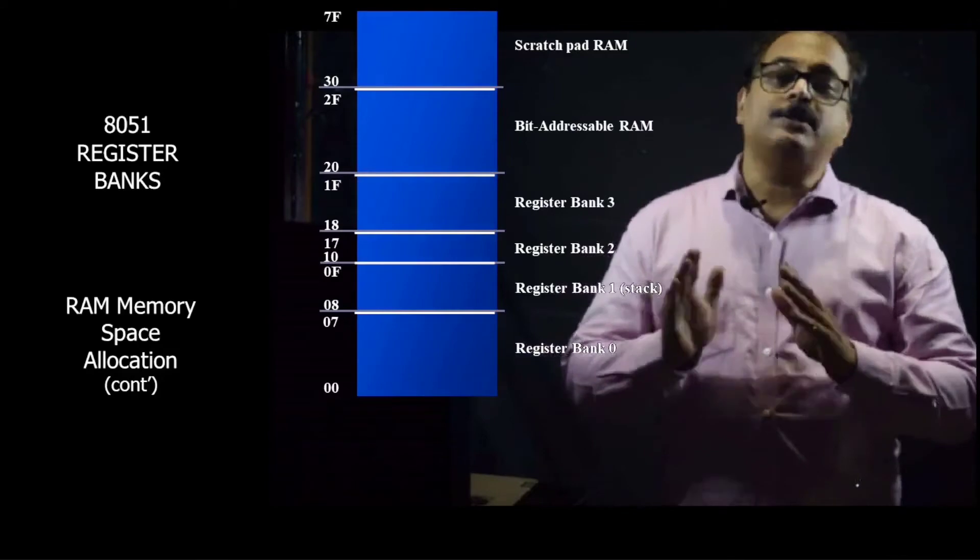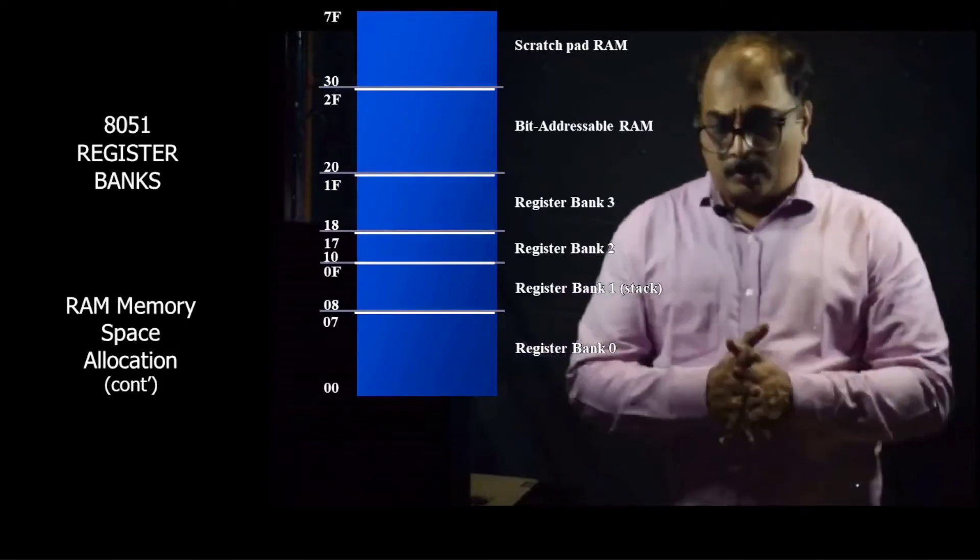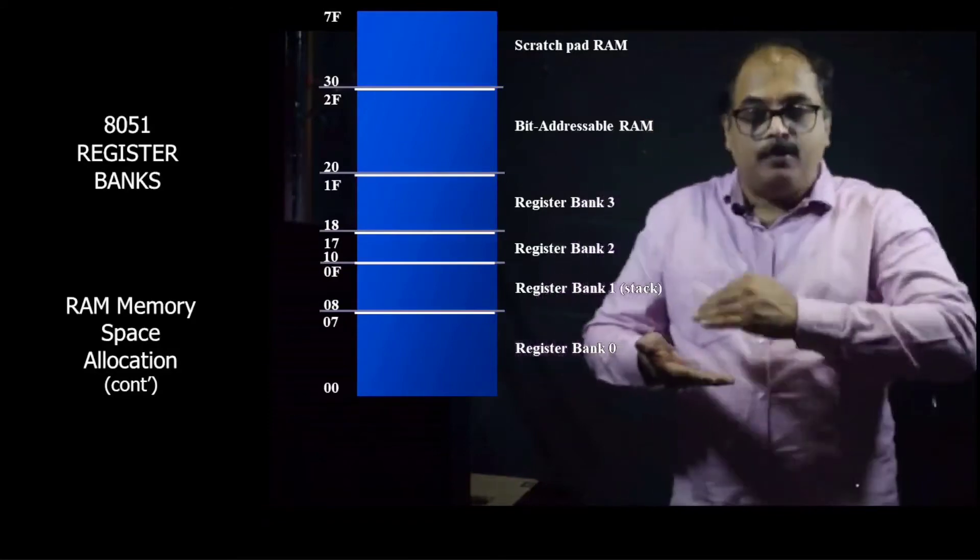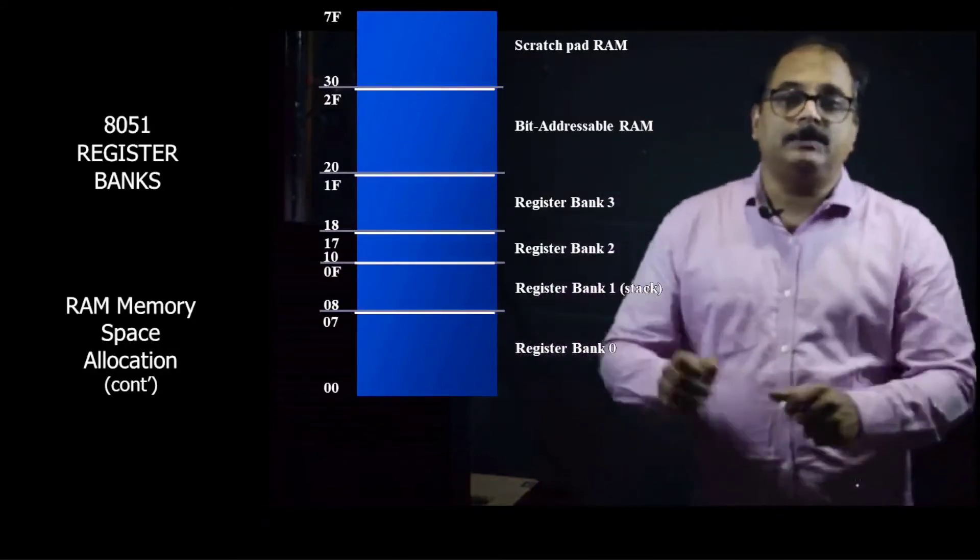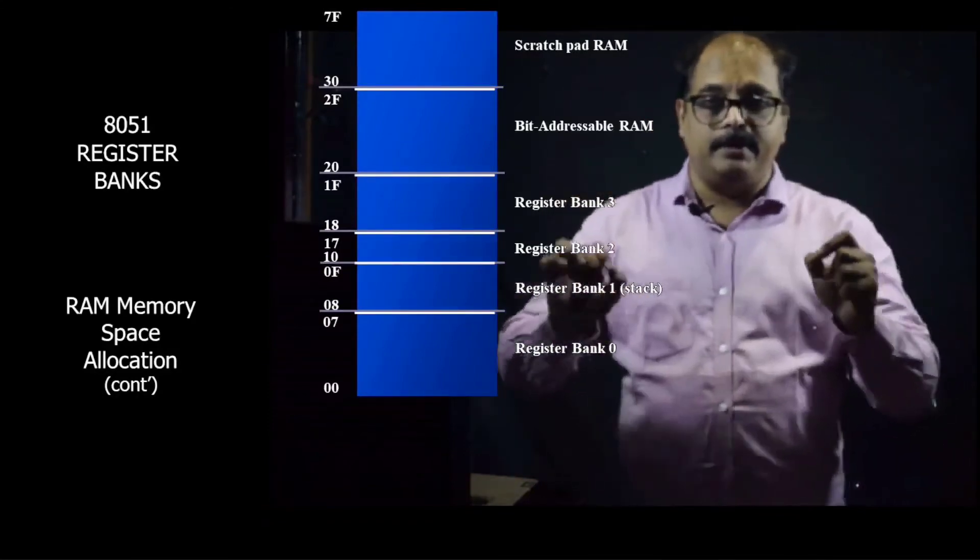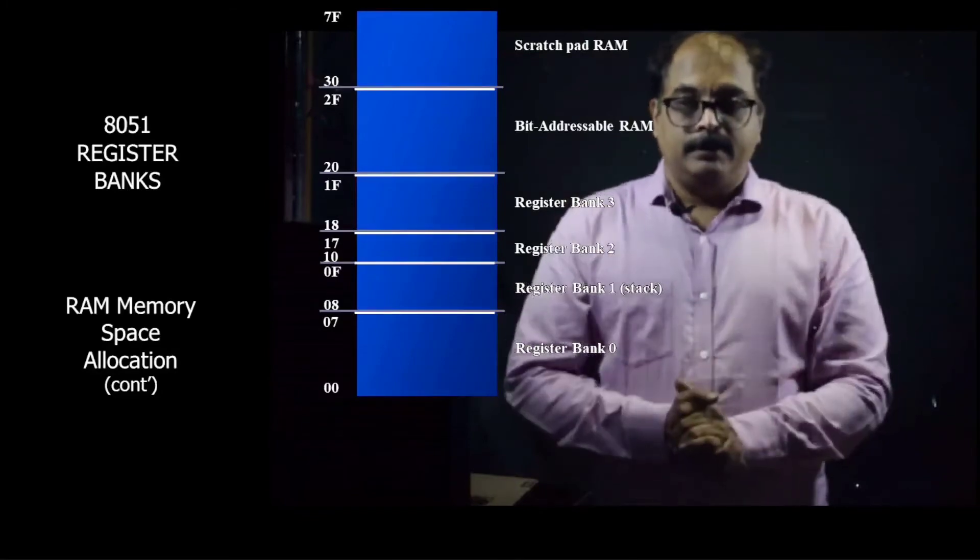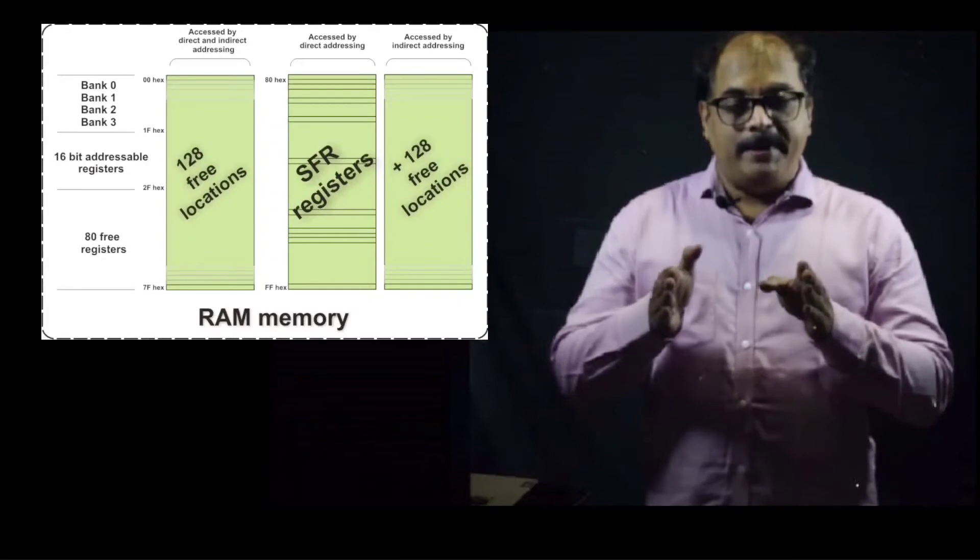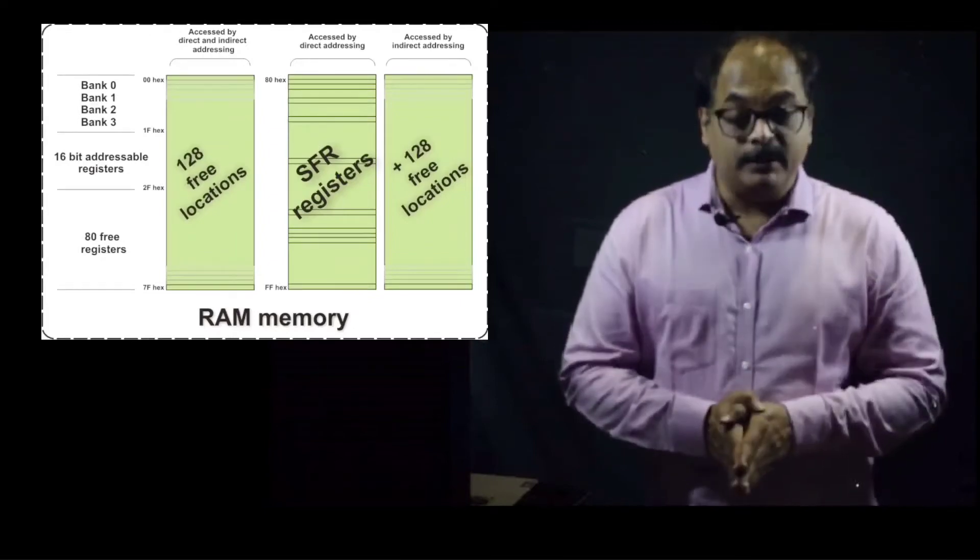Rest of the memory, that is from 30 to 7F, this area is available to you as scratch pad RAM or it is also called as general purpose RAM. So this is how the first 128 bytes of RAM is divided in 8051.